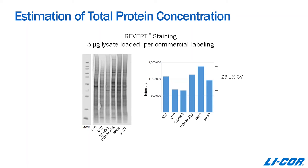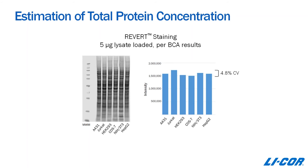So what happens if we actually do a protein assay on those lysates? To minimize error, you really have to take this step and adjust for sample concentrations to make loading as consistent as possible. We used the BCA assay to determine the protein concentration of each sample, then repeated the experiment by loading five micrograms of lysate based on BCA results, transferred to a membrane, stained with total protein stain, and measured signal intensity. The CVs were dramatically reduced, with much more uniform loading. The sole purpose is to minimize error and allow much more accurate sample-to-sample comparisons.